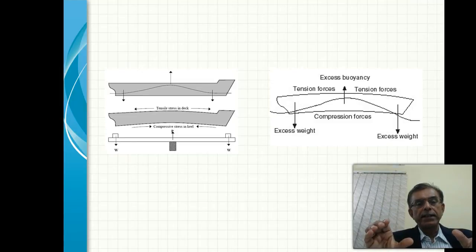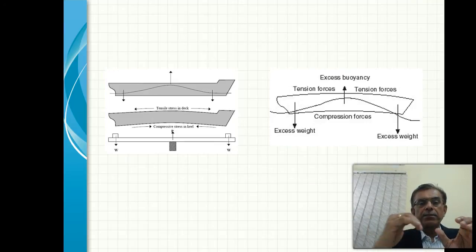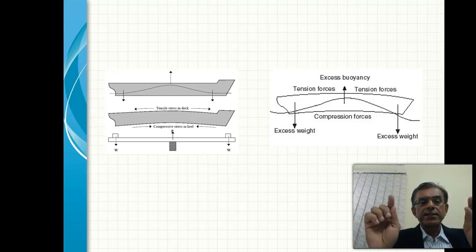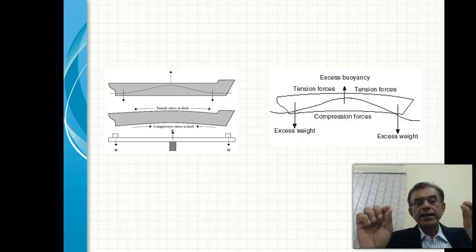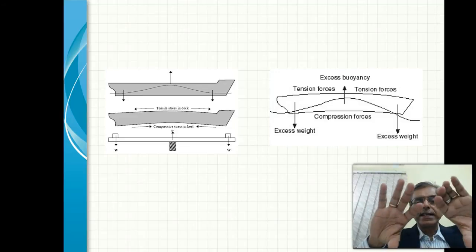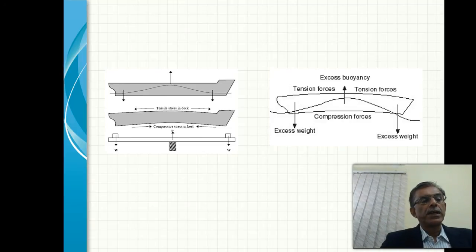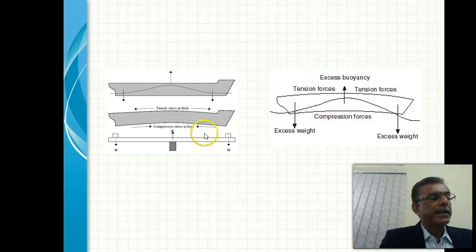One is the longitudinal bending on a seaway which we can call sagging, which creates tensile stresses on the deck and compressive stresses on the keel side. So the tensile stresses on the deck lead to cracks and failures while the compressive strength on the bottom can lead to buckling and failures. Similarly in a hogging situation it's exactly the reverse: compression on the deck and tension on the bottom.